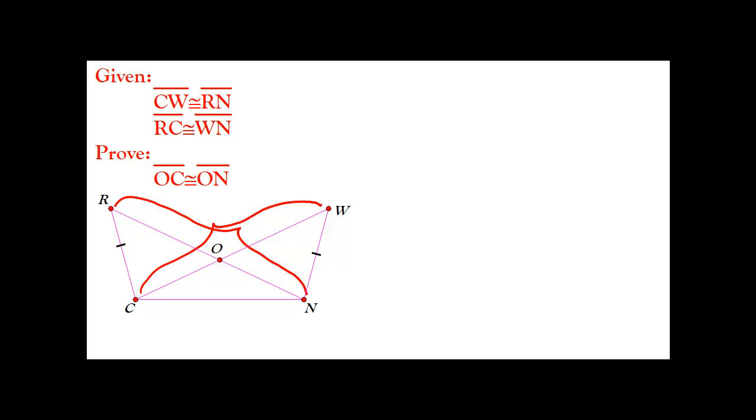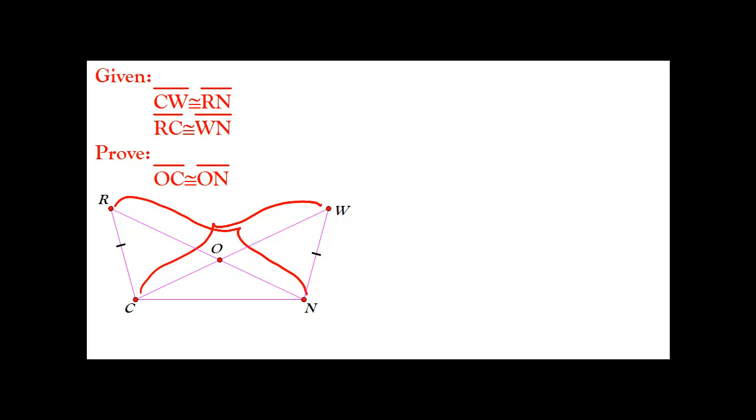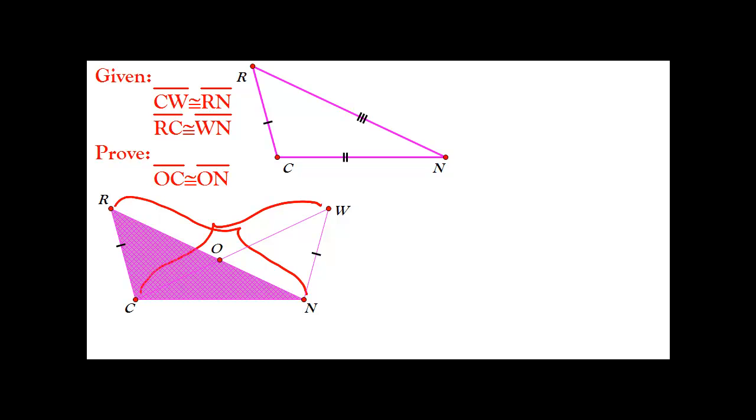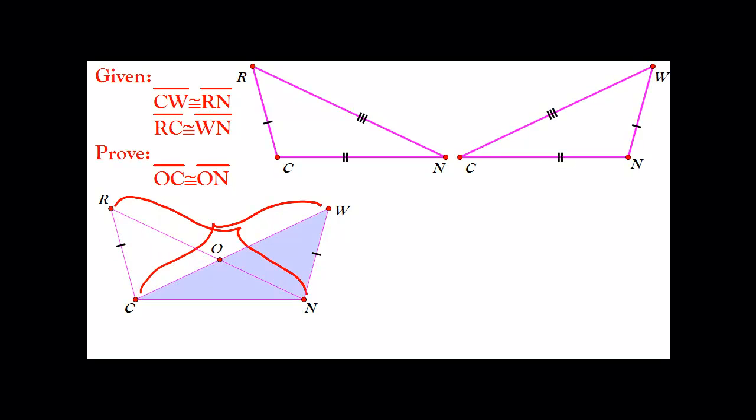Figure out which triangles those parts belong to. The segments we've referred to belong to triangle RNC and triangle WCN. Sometimes the diagrams are pretty complex and things are overlapping. If that's the case, pull useful triangles out and draw them to the side. So here we have triangle RNC with the corresponding tick marks and triangle WCN.